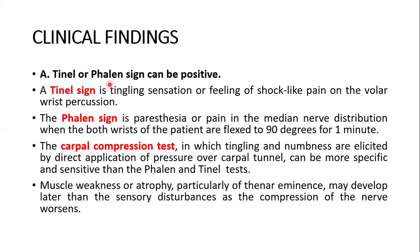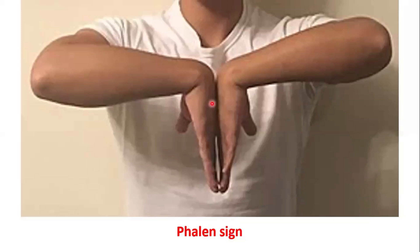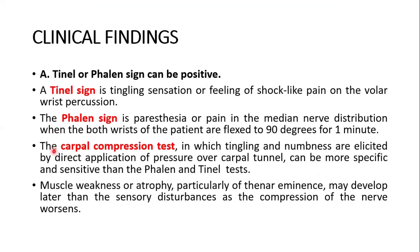Clinical findings include: the Tinel sign, a tingling sensation or shock-like pain on percussion over the wrist; and the Phalen sign, paresthesia or pain in the median nerve distribution when both wrists are flexed to 90 degrees for one minute. The carpal compression test, in which tingling and numbness are elicited by direct pressure over the carpal tunnel, can be more specific and sensitive than both the Phalen and Tinel tests.